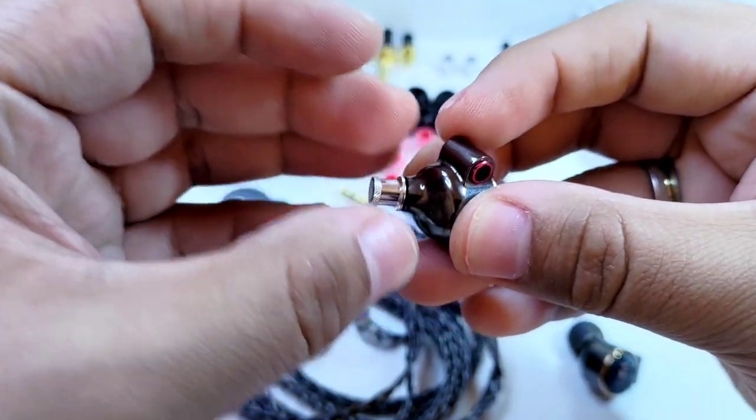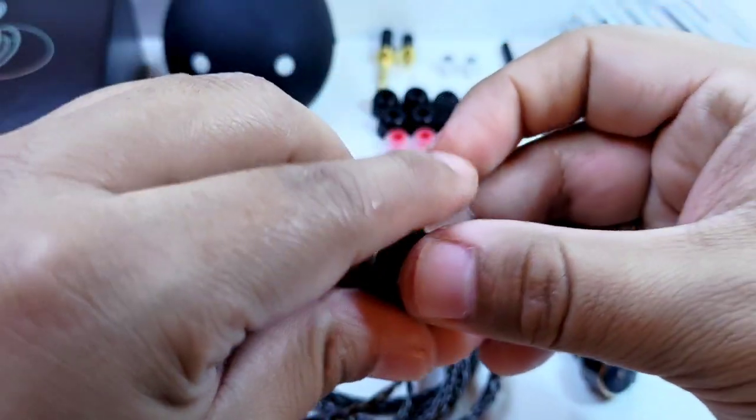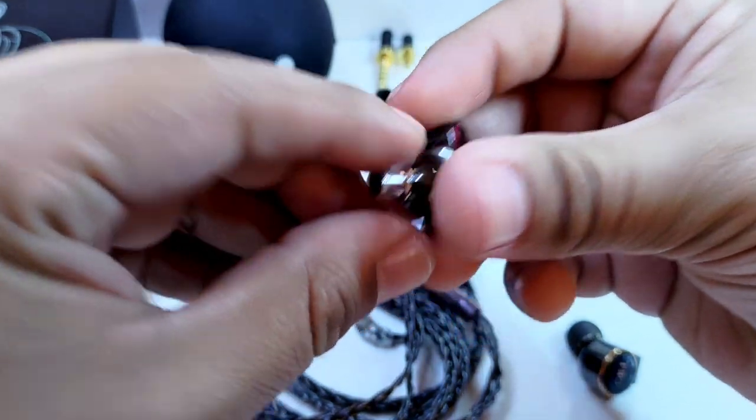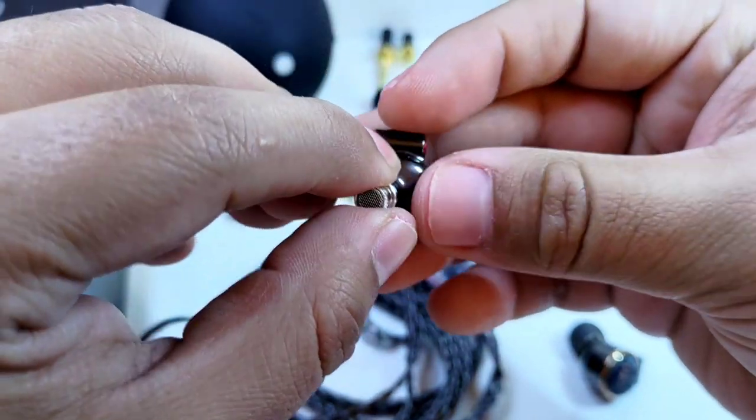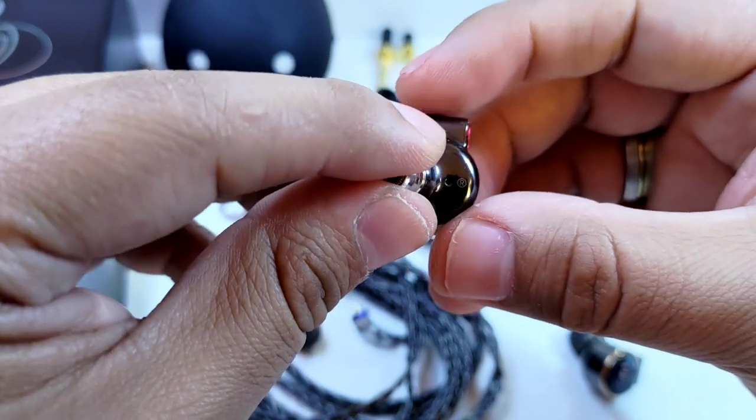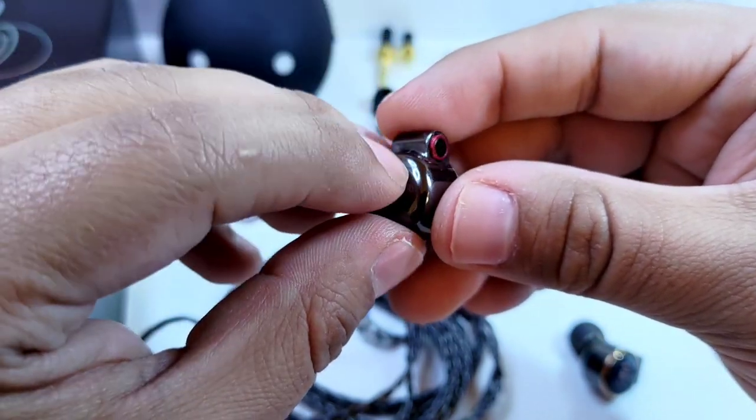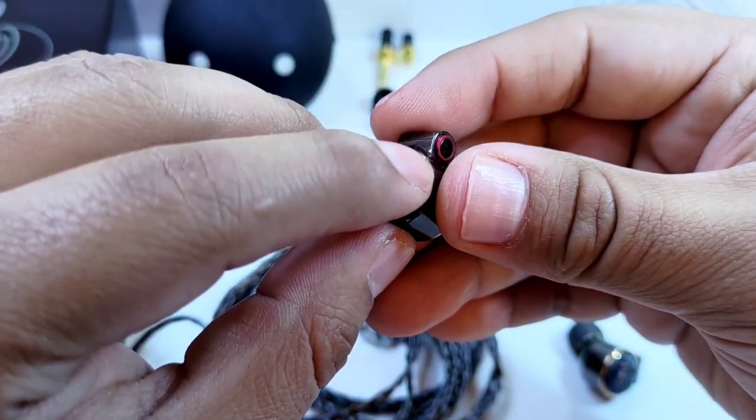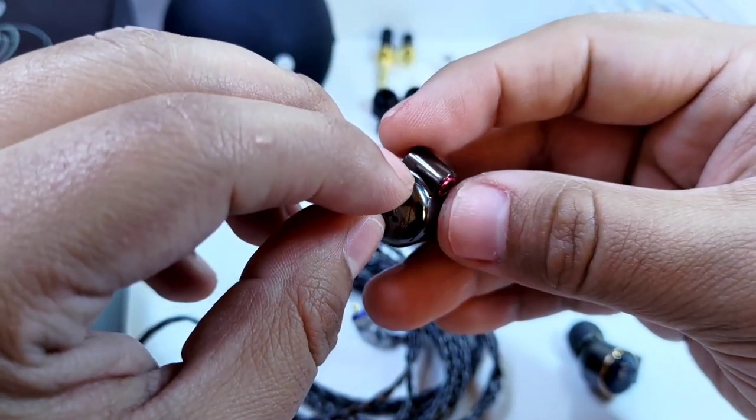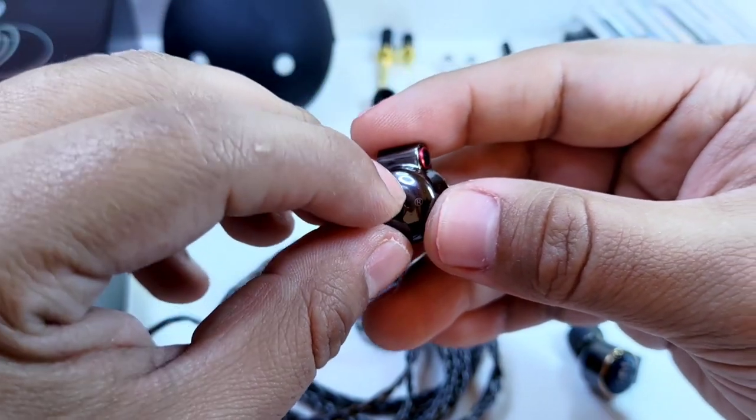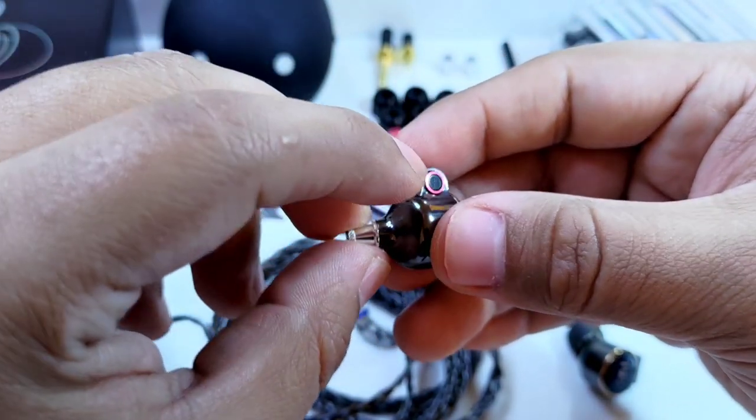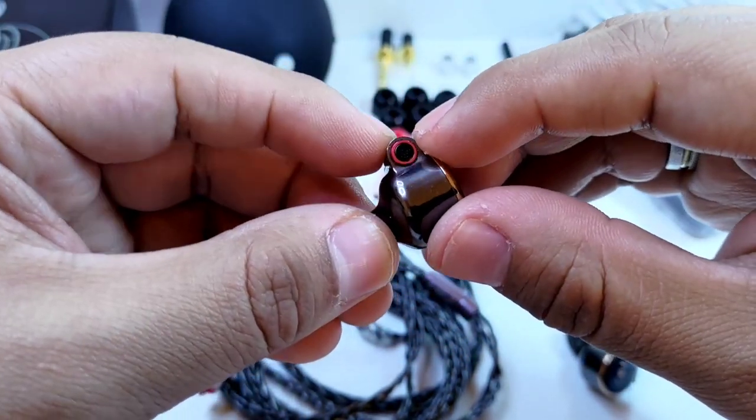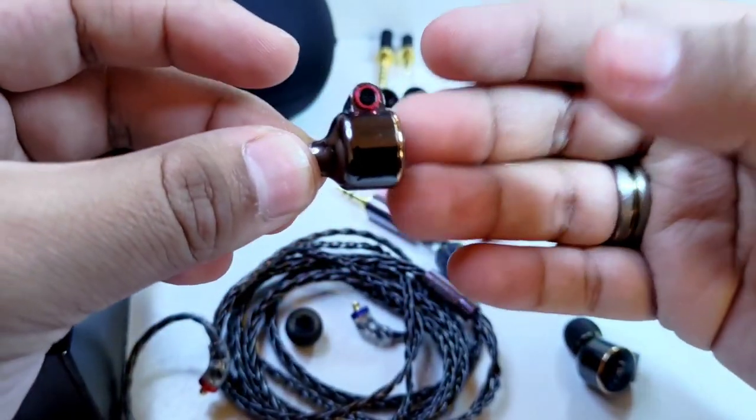En el video del unboxing también vimos una curiosidad, las boquillas que modifican hacia un sentido más basehead están preinstaladas y no las que vienen por default, entonces eso me resultó curioso. Bueno, si lo vemos dentro de esta cara podemos observar una ventosa para liberar un poco la presión del aire. También nos encontramos, por supuesto, con la nomenclatura del lado del auricular que estamos observando, en este caso R para derecho, L para izquierdo.